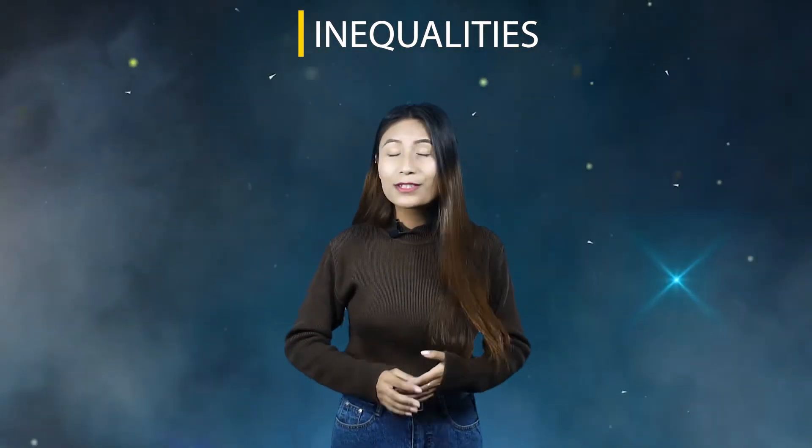Let's understand its meaning with some examples. For any two numbers a and b, any of the following three statements is true at a time: either a is greater than b, or a is equal to b, or a is less than b.